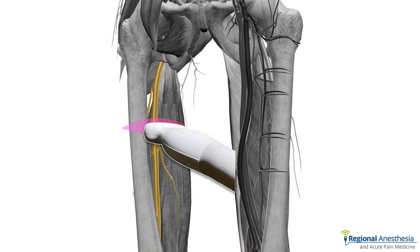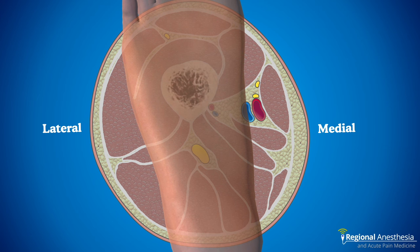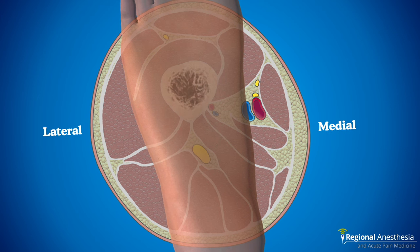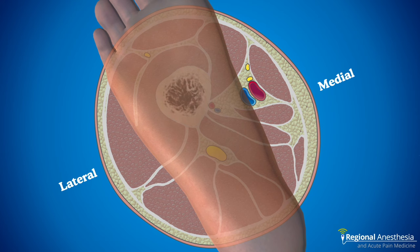Here's where we're going to scan for the anterior sciatic block — about 10 centimeters from the inguinal crease, approaching from the anterior medial thigh. To get there, it's useful to externally rotate the thigh or frog-leg the patient if possible. We often do these in patients with external fixators on their calf or ankle, and movement can be limited.